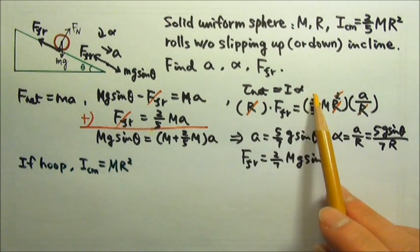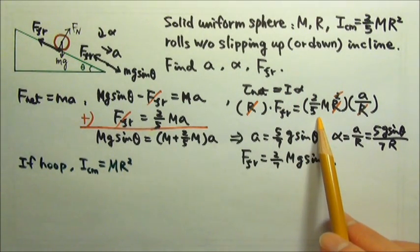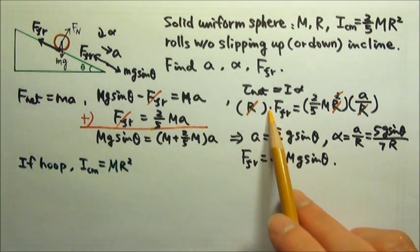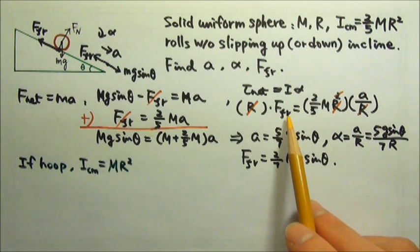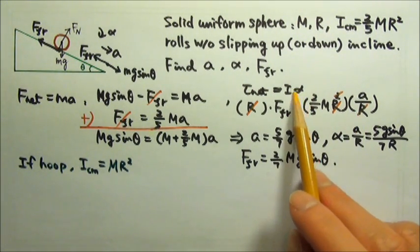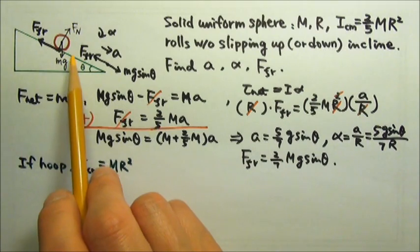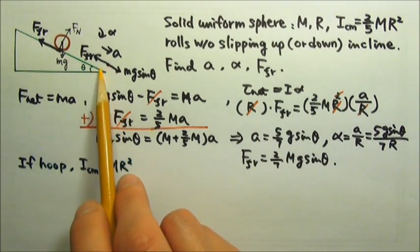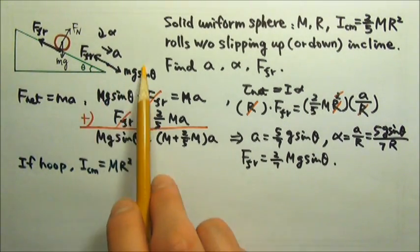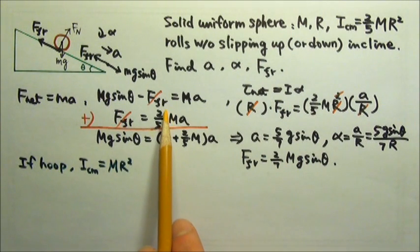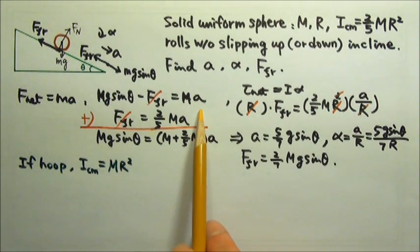For something with a larger rotational inertia, the net torque equals to I alpha. This is bigger. That means it would require a larger friction to provide a torque to accelerate it angularly. If the friction is bigger, that means the net force, the downward net force is smaller, so the acceleration will be smaller.